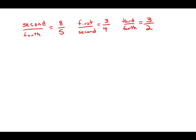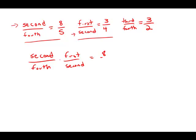Now notice, if I look at just these first two, I have second graders in the numerator here and second graders in the denominator here, and I'm not really interested in having second graders as part of the answer, so I'm just going to multiply these two. So second over fourth times first over second, that equals 8 over 5 times 3 over 4.